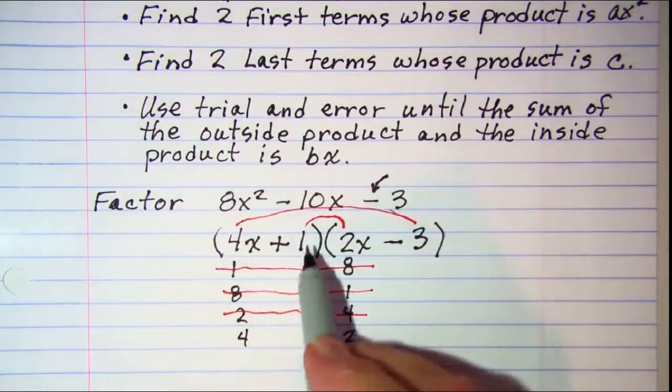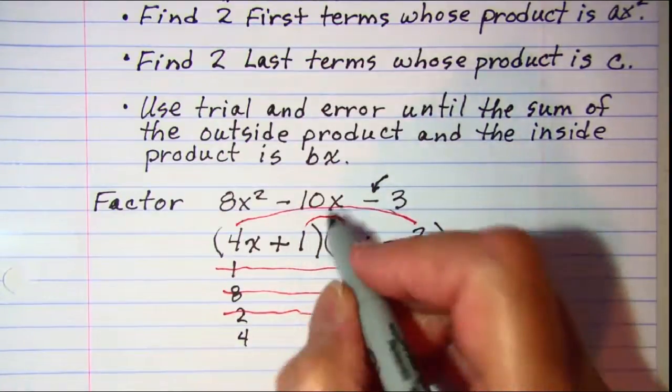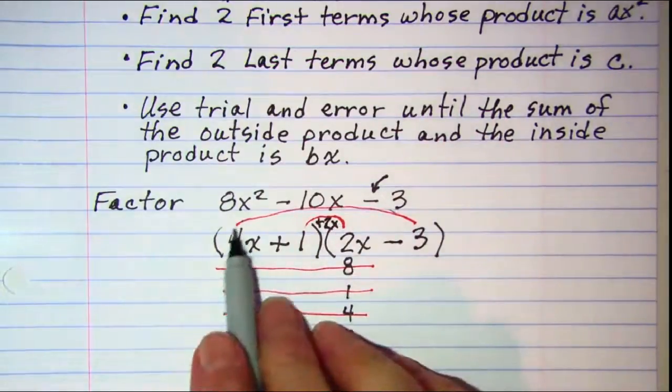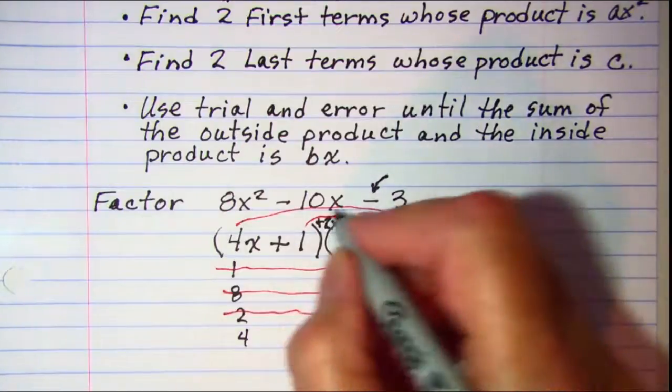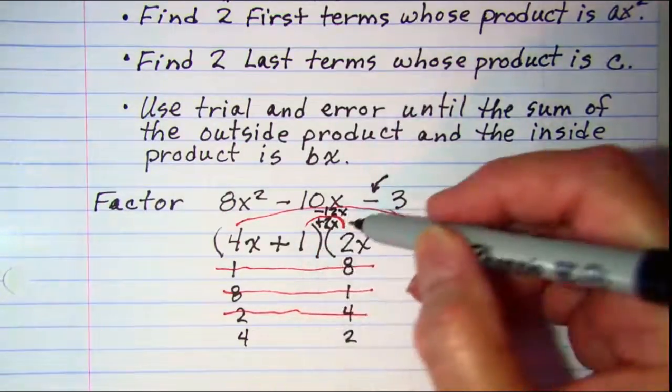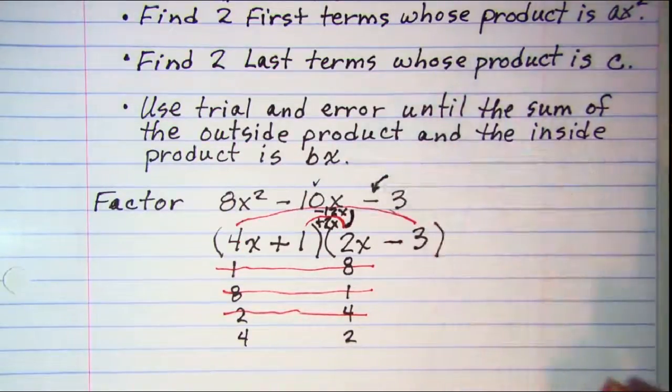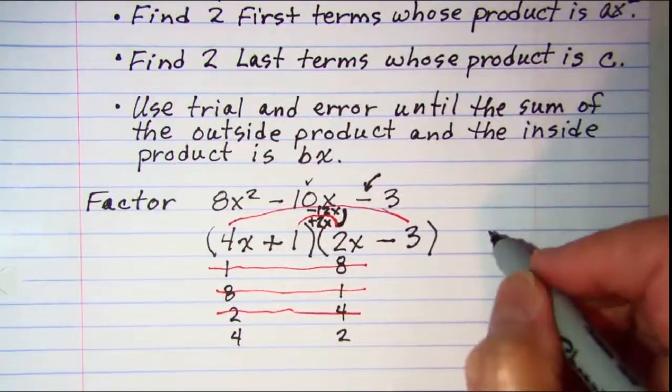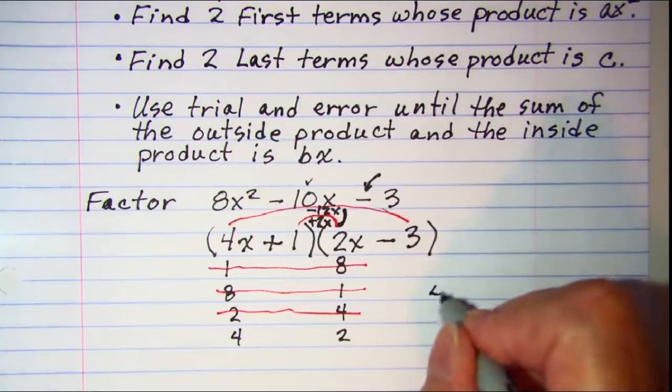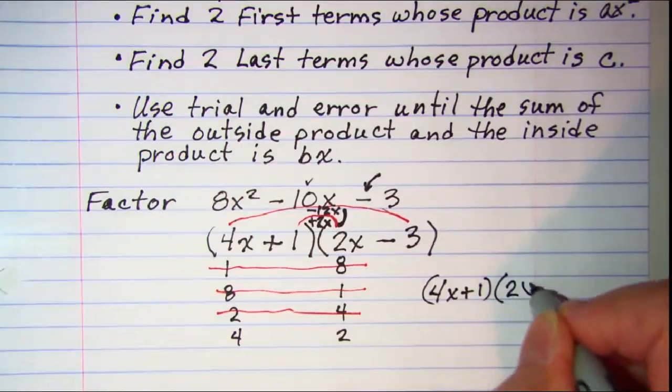So now if we check this, my inner product is a positive 2x, and then my outer product is a negative 12x. And when I add these two together, I get my negative 10x. So my factored form for this trinomial is 4x plus 1 times 2x minus 3.